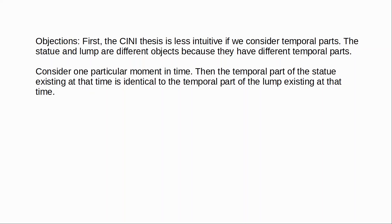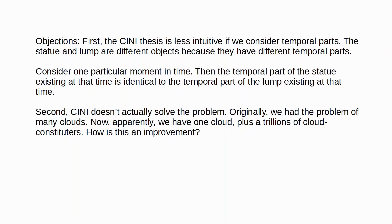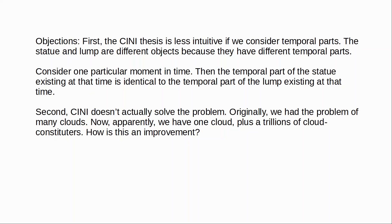Lewis's second objection is that even if we accept that constitution is not identity, this doesn't really provide us with a solution — we've simply replaced the original problem with a similar one. Originally we had the problem of many clouds. But now we have the problem of one cloud plus many cloud constitutors. Our initial intuition was that there's only one cloud, but now apparently we need to postulate one cloud plus an indefinite variety of cloud constitutors. How is that an improvement? This becomes particularly acute when we consider that cloud constitutors are exactly like clouds — they have the same intrinsic properties: the same mass, shape, density. Which raises the question: what makes them not clouds?